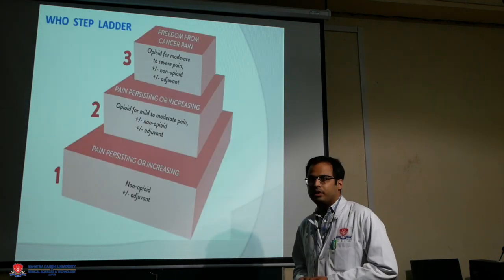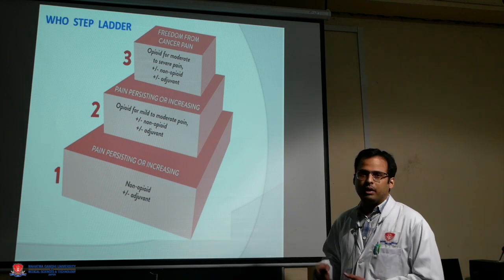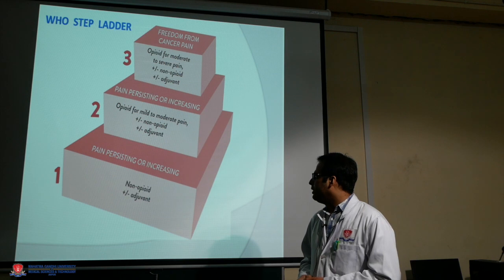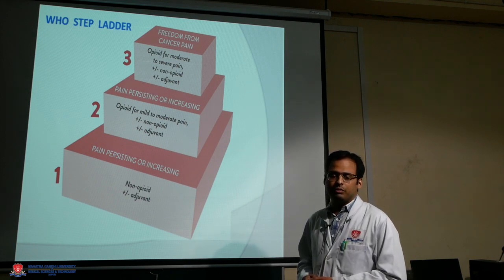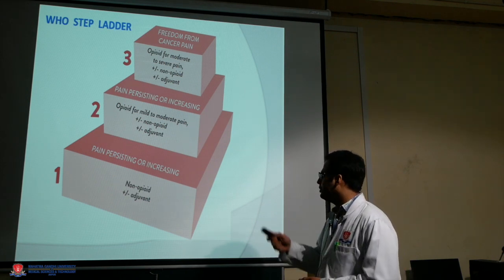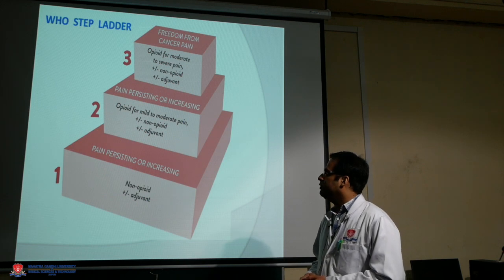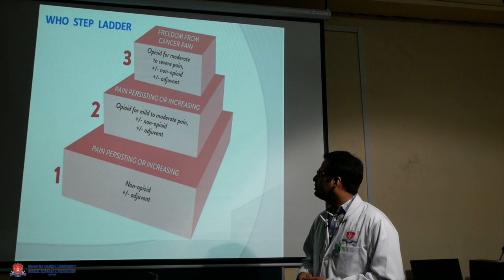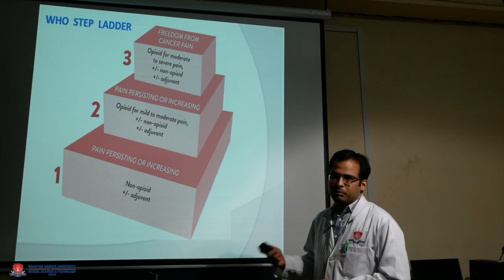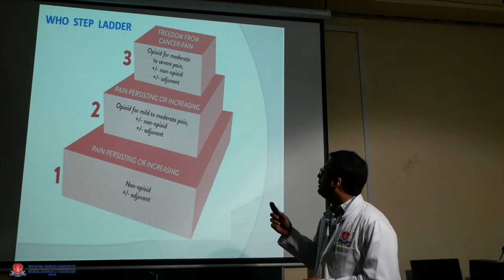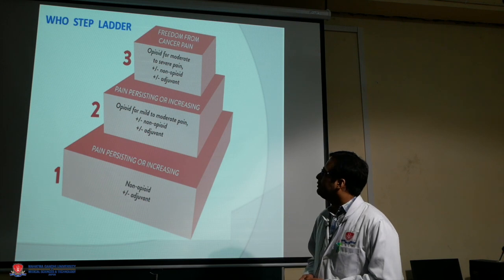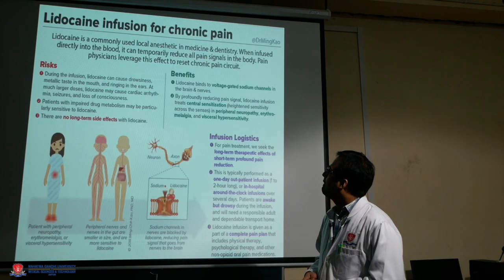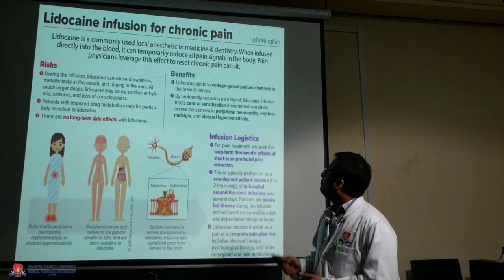This is the WHO step ladder, which indicates the treatment of pain in cancer patients. In step one, non-opioids and adjuvants are used for pain management. If pain is persistent or increasing, opioids for mild-to-moderate pain are added with non-opioids and adjuvants. If pain is still persistent or increasing, opioids for moderate-to-severe pain are used along with non-opioids and adjuvants.